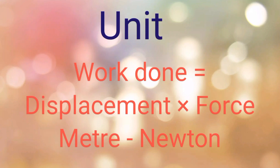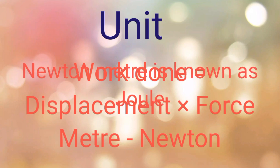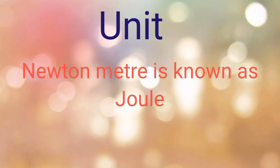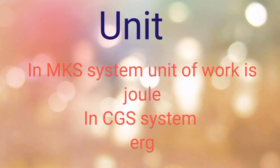Work Done = Displacement × Force. The unit of displacement is meter and the unit of force is newton, so the unit of work done is newton-meter. Newton is the unit of force and meter is the unit of displacement. This newton-meter is also known as joule — newton-meter is termed as joule in physics. The unit of work done in the MKS system is joule, and in the CGS system it is erg.